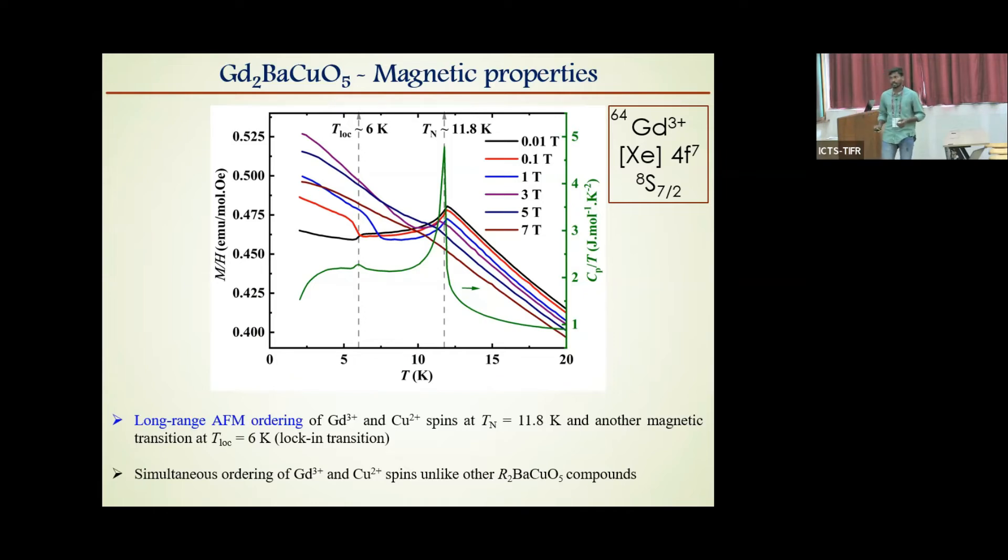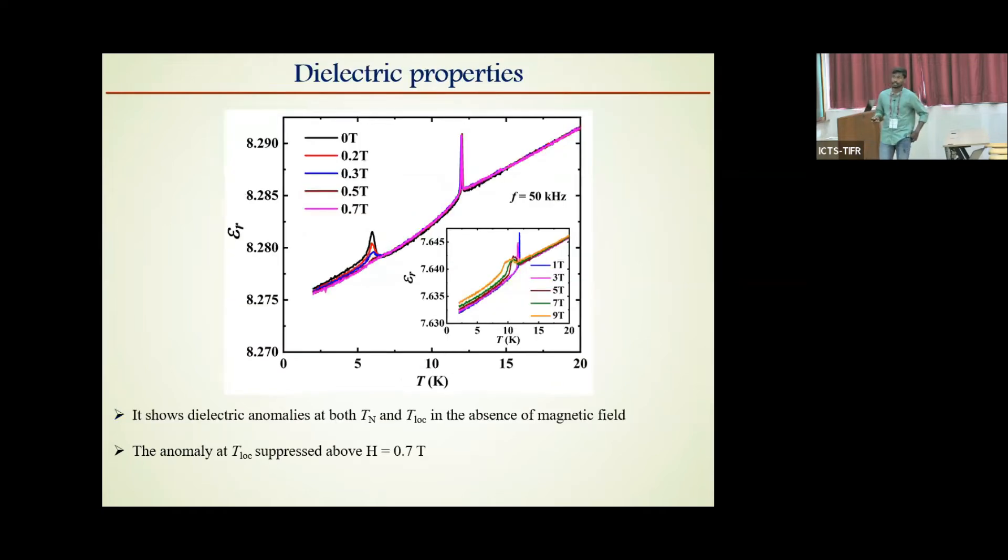The possible reason for this can be since gadolinium has ground state S state, which means there are no crystal field effects. It can easily accept the spin induced movement by the copper spins in the magnetic interaction path and order along with the copper itself. Further, dielectric constant showed two clear anomalies at both the magnetic transitions, confirming the presence of magneto-dielectric coupling. With increasing magnetic field, the dielectric anomaly at lock-in transition disappeared above 0.7 tesla and there is suppression of dielectric anomaly at TN under high magnetic field. So the presence of magneto-dielectric coupling is an initial indication that the compound can be multiferroic.